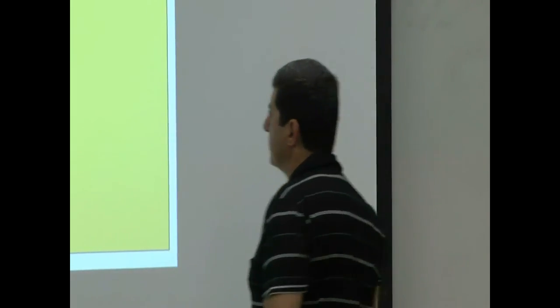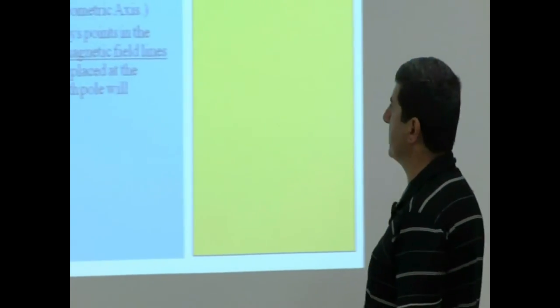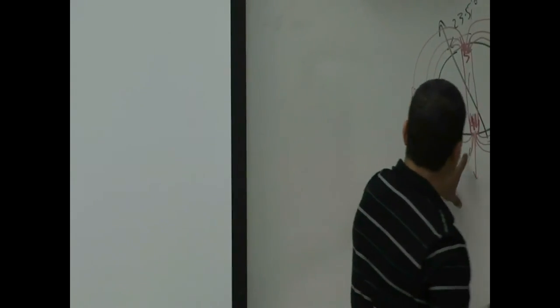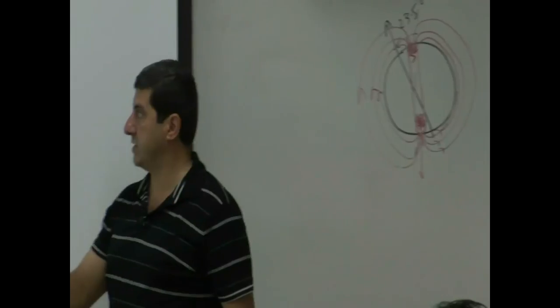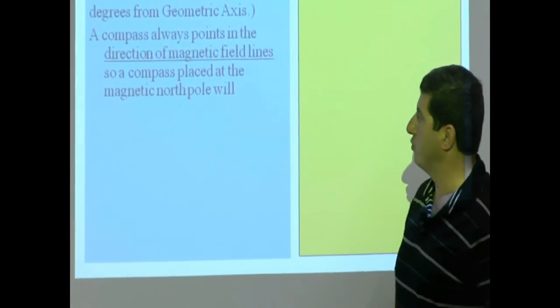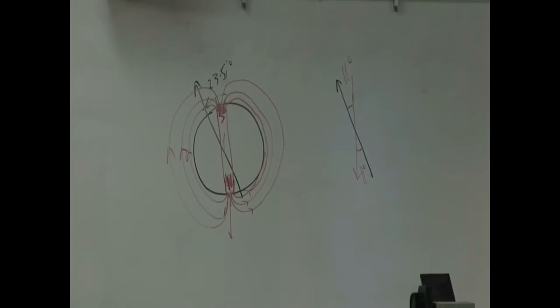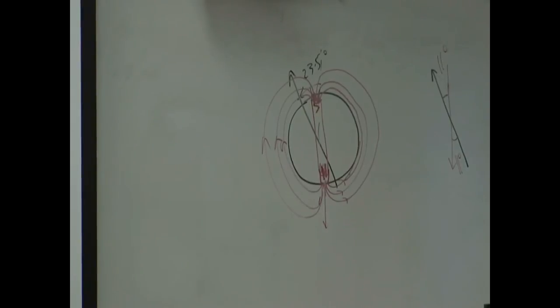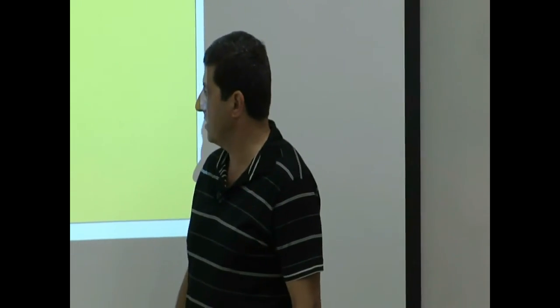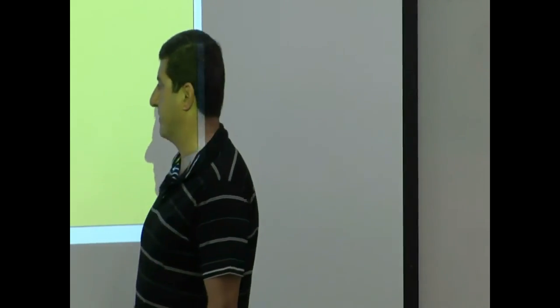A compass always points in the direction of magnetic field lines. A compass placed at the magnetic north pole will point upward, and a compass placed at the magnetic south pole will point downward. In LA, compasses point a little downward because we're above the equator. But at the equator, they would point horizontal to the ground.